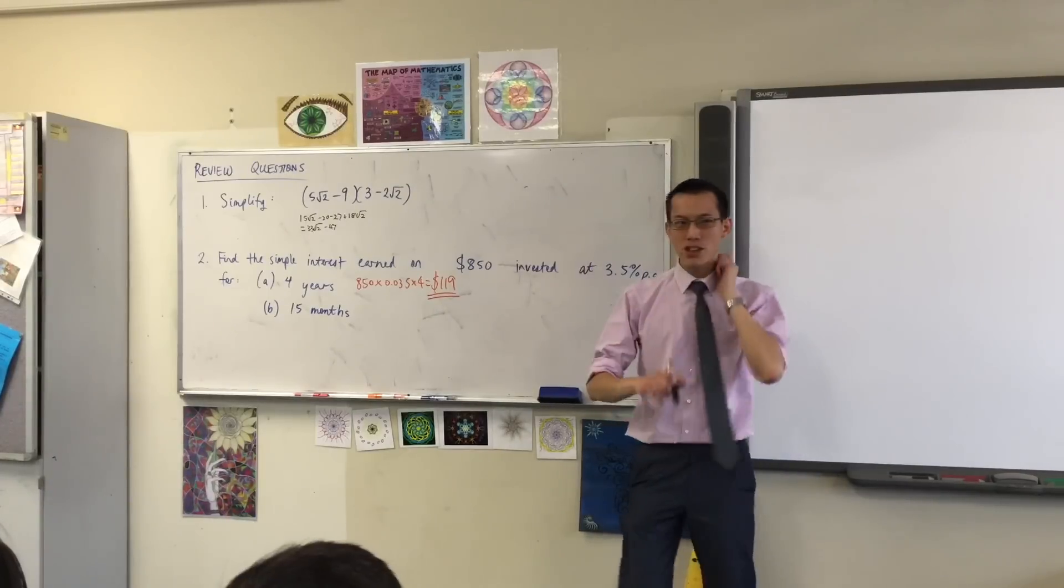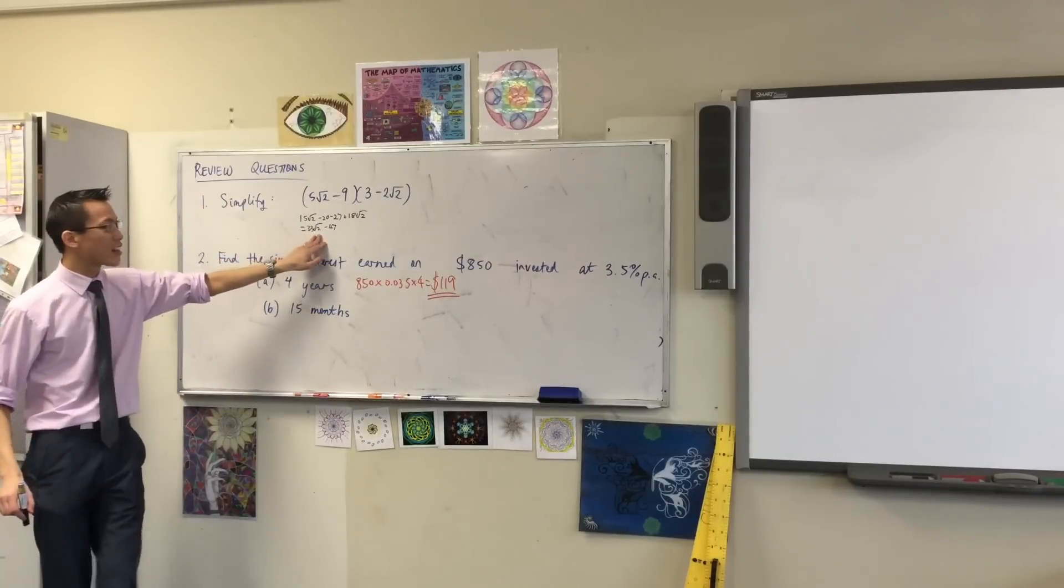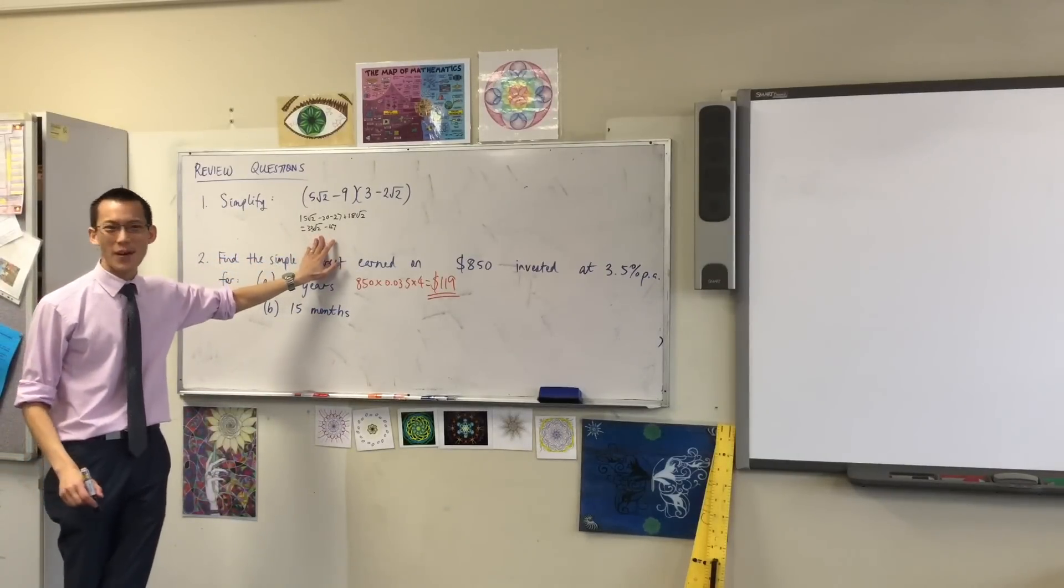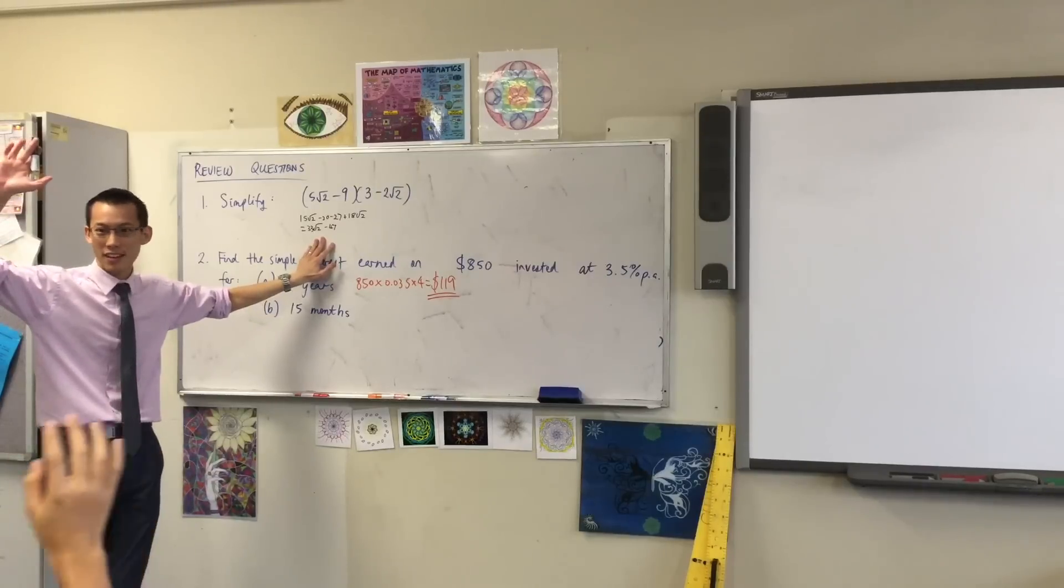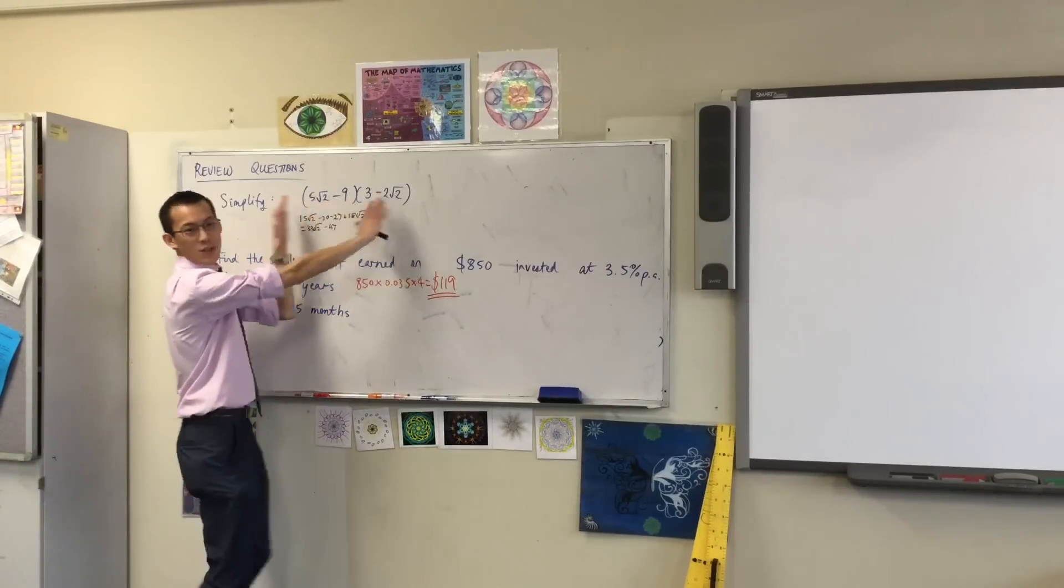Let's have a look at the top one. In case you can't quite make it out, that reads 33√2 minus 47. Do I have some agreement? Yeah, fantastic, thank you.